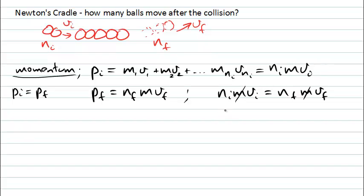We can rearrange this expression to show that the final velocity, after the collision, will be ni divided by nf, multiplied by the initial velocity. So at the moment this doesn't really tell us how many objects have to leave, compared to how many came in.